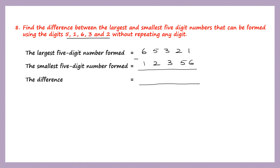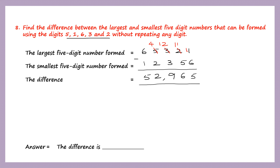Now let's subtract 12,356 from 65,321. 1 minus 6 — borrow — 11 minus 6 is 5. Then borrow again: 11 minus 5 is 6. Then borrow: 12 minus 3 is 9. 4 minus 2 is 2. 6 minus 1 is 5. So the difference is 52,965.